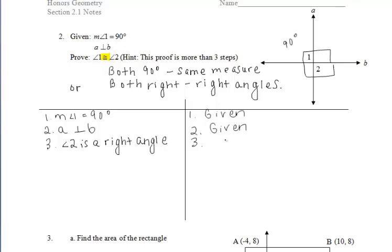So from the perpendicular lines, we can say that angle two is a right angle. And this is a new reason here. It states that if two lines are perpendicular, then they form a right angle.